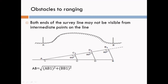From point A, draw AB1 and select the point B1. From point B1, draw perpendicular B1B. Select the intermediate points C1 and D1 on line AB1. From points D1 and C1, draw perpendiculars C1C and D1D.